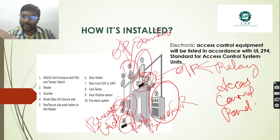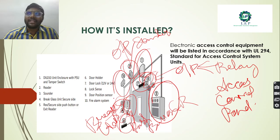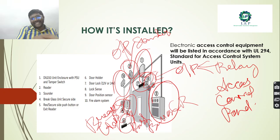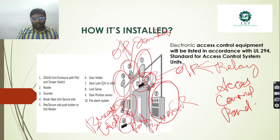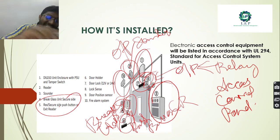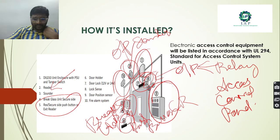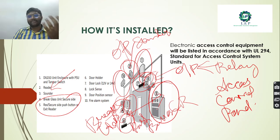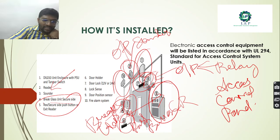The equipment includes a card reader, a break glass unit, and a button to exit the doors. These are normally installed inside the room. Even though a person accessed the room through the card reader by scanning, if the person inside has any sort of issues, they can either break the glass or use the push button option to exit.